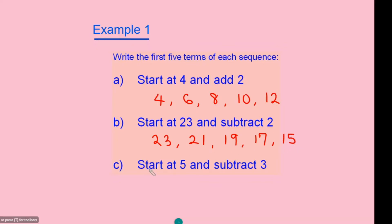For question C, the sequence starts at 5. The next step you subtract 3 from 5 to get 2, then 2 take away 3 gives minus 1, minus 1 take away 3 gives minus 4, and then the next one would be minus 7. This is how you solve a real practical question.